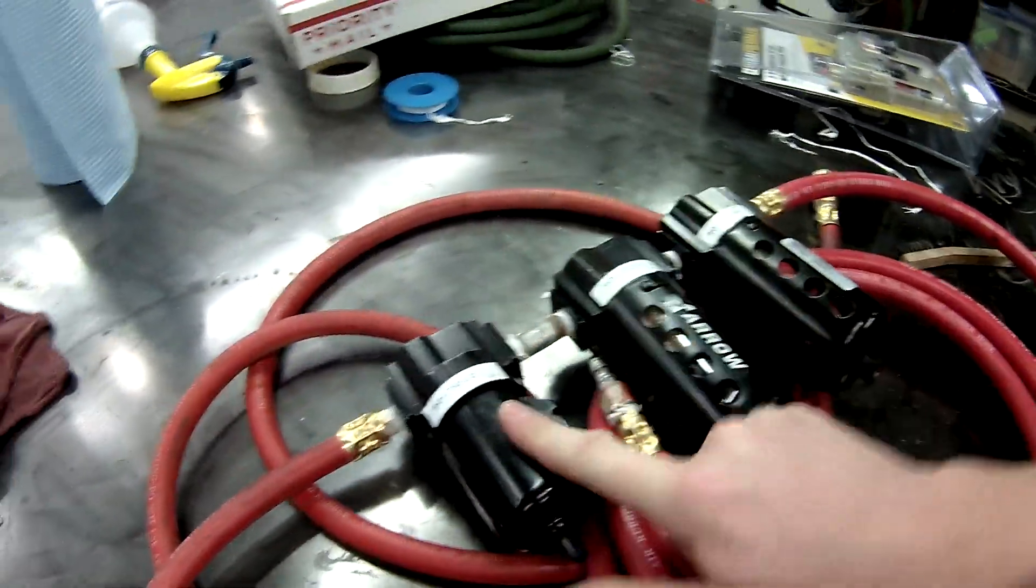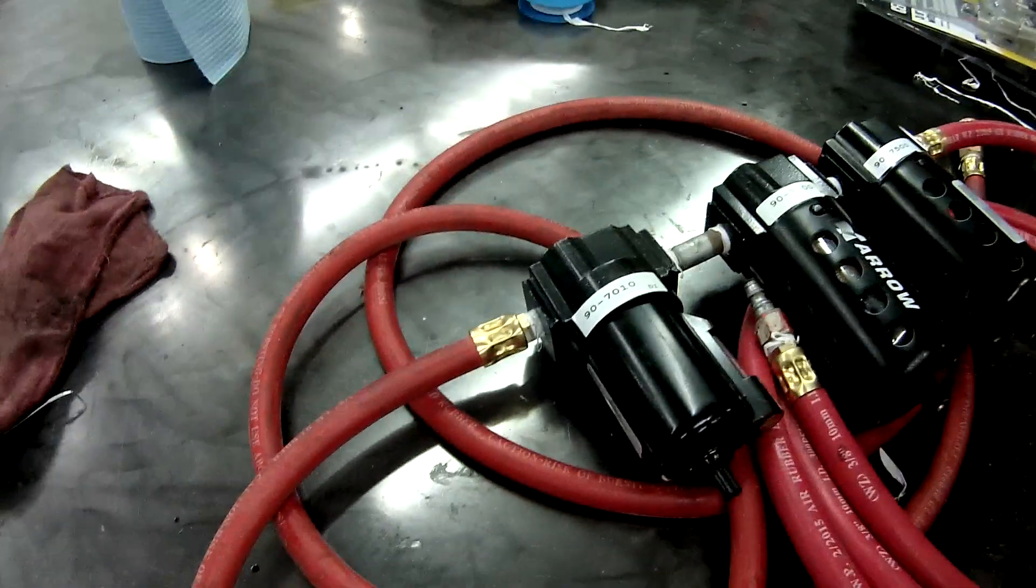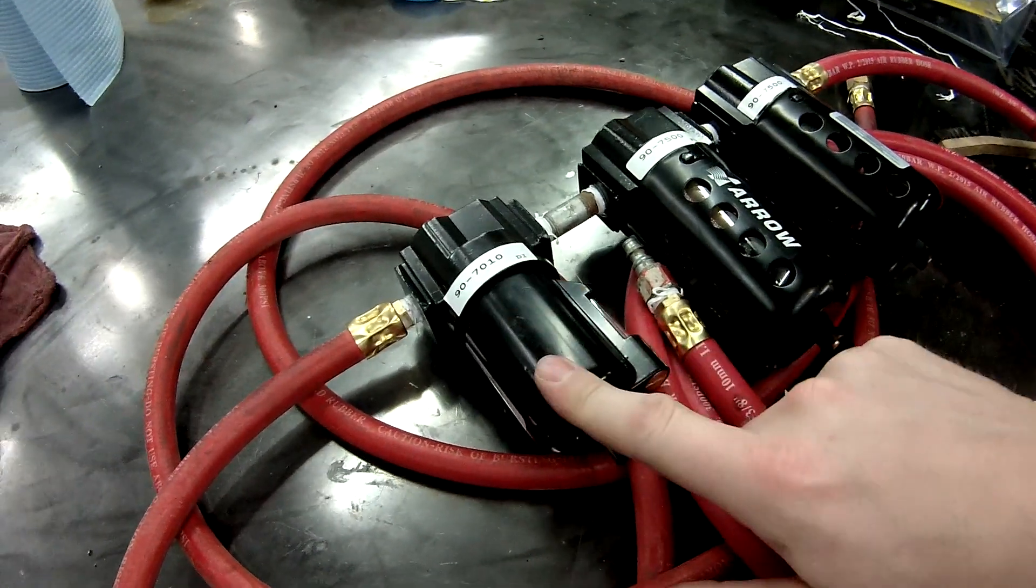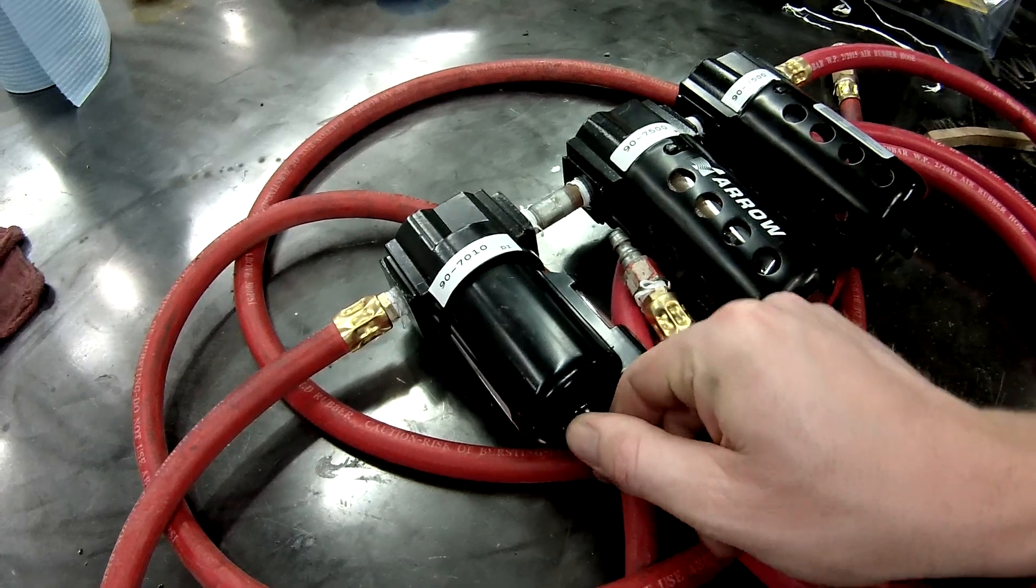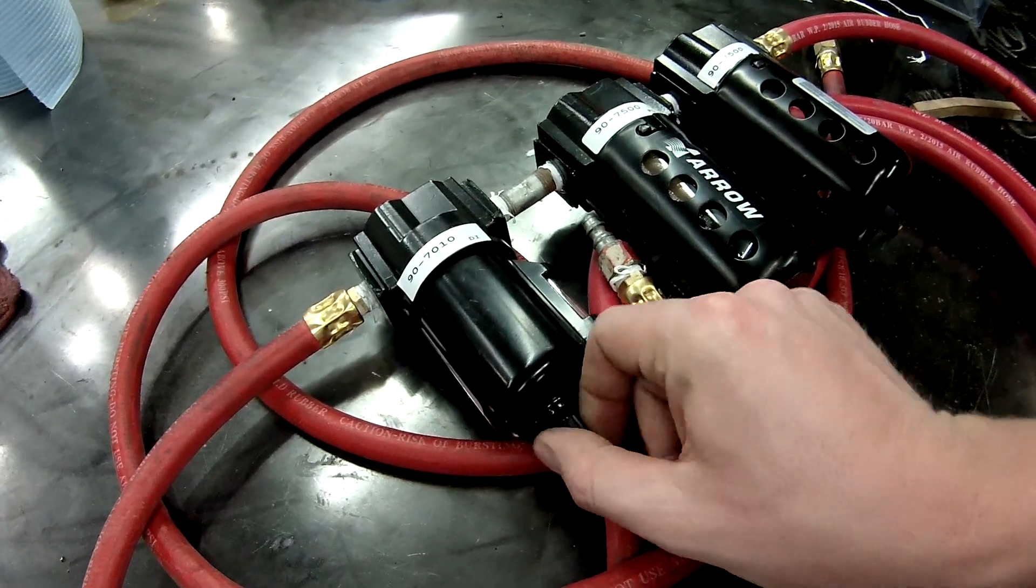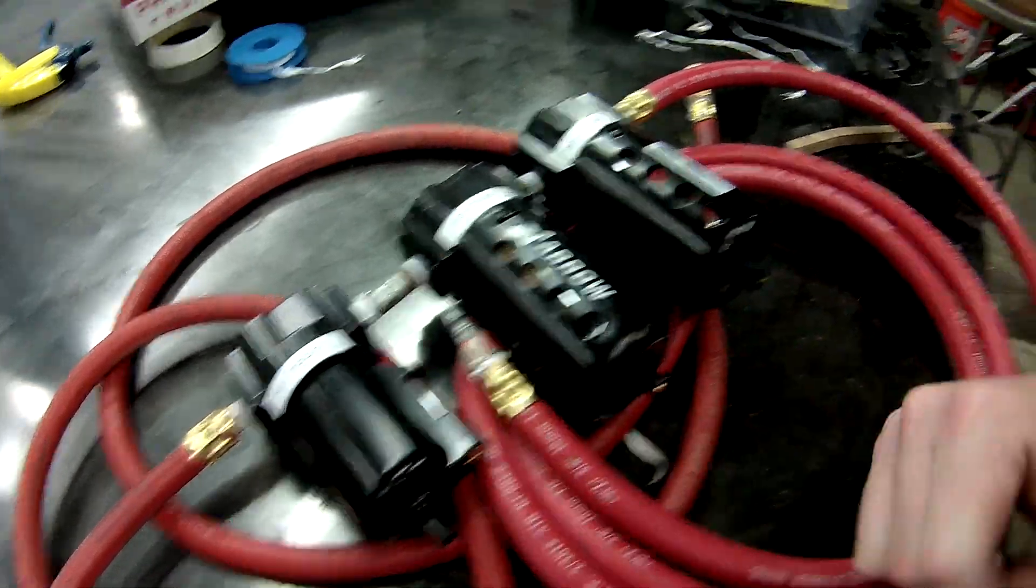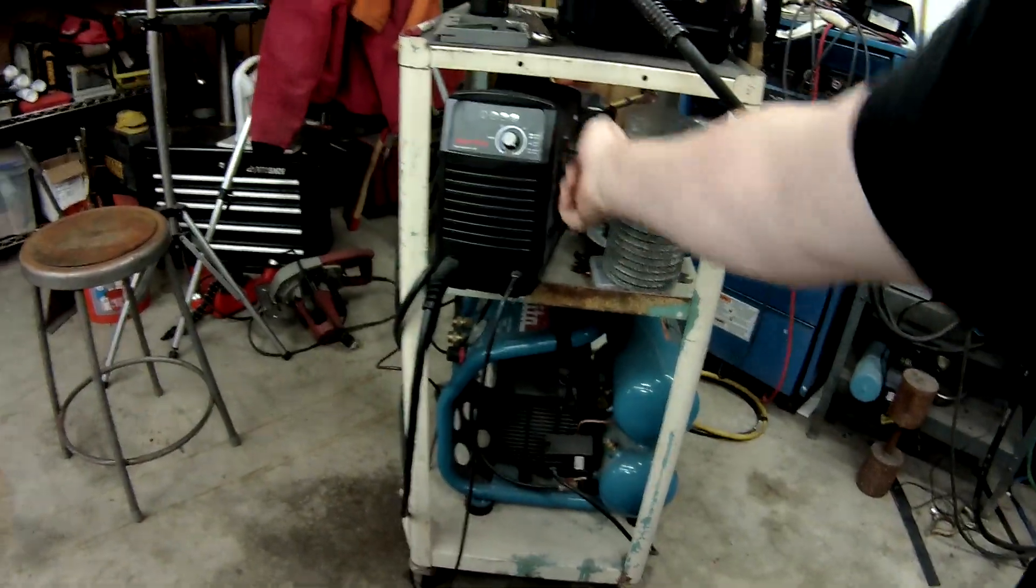So I was watching eBay and I picked up this filter. Now this is another Napa one here but it is more of a filter than a water separator and I was still getting moisture. You can unscrew this guy here and it was still dumping water, which I wasn't very happy about, and then I was still getting water even with two of those and this guy.